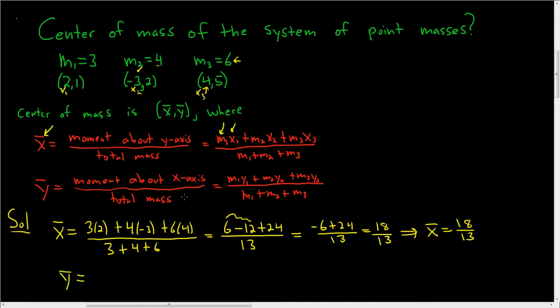And it's the same thing, except it's the moment about the x-axis divided by the total mass. So this time you just take all of the y-coordinates of your point masses, and you multiply them by their corresponding masses. So in this case it'll be 3 times 1.